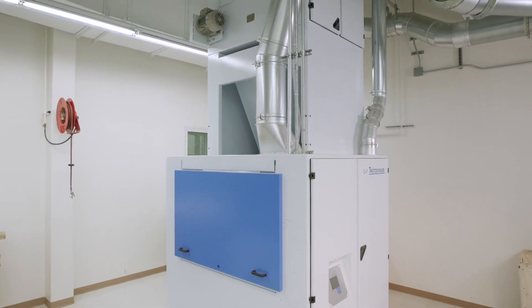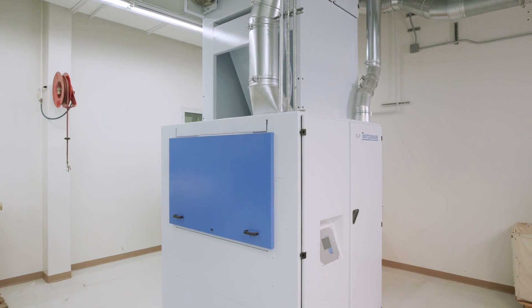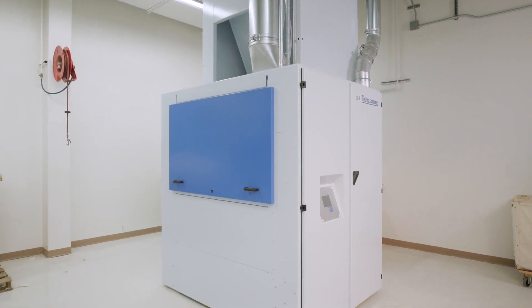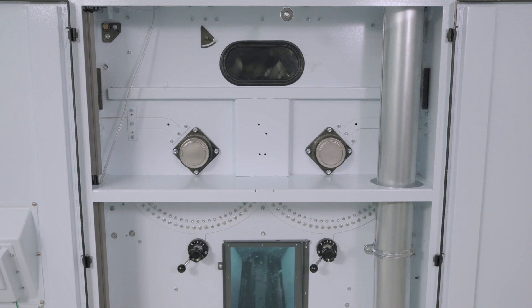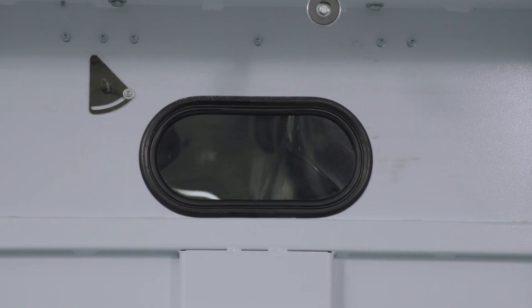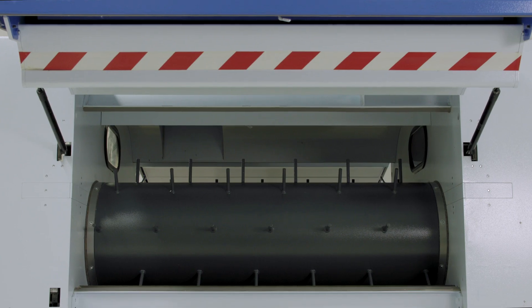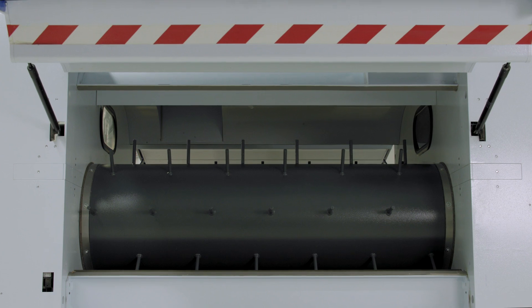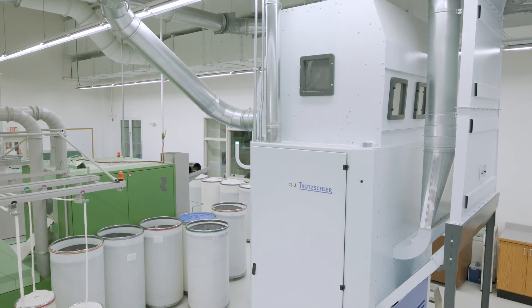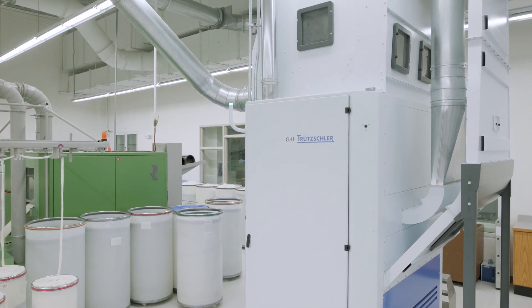The first cleaning machines are usually designed to be coarse cleaners. That is, they're designed to remove the larger and heavier trash particles. Fine cleaners will be found last in the cleaning line and just before carding.